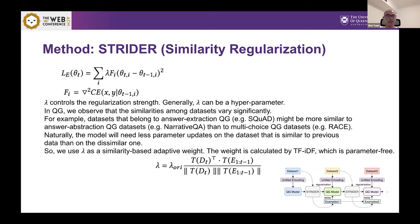But here in QG we observe that similarities among datasets are very different. For example, the answer extraction QG datasets like MS MARCO is also similar to answer abstraction QG. However, it will be much dissimilar to multi-choice QG. So the similarity is very different. We think that the model will need less parameter updates on datasets that is similar to previous data than on the dissimilar one. So we define Lambda's value based on the dataset similarity calculated by TF-IDF which is parameter-free.